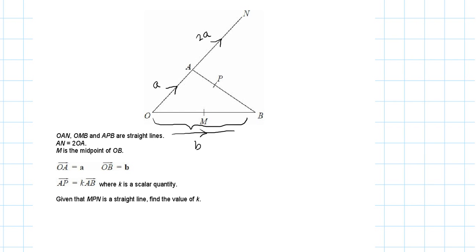The question says AP is K times AB where K is a scalar quantity. Given that MPN is a straight line, we need to find the value of K.